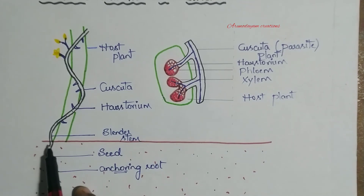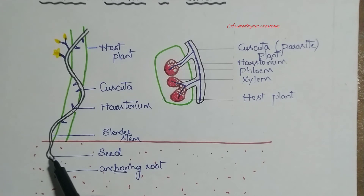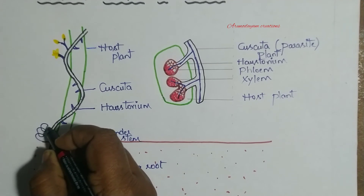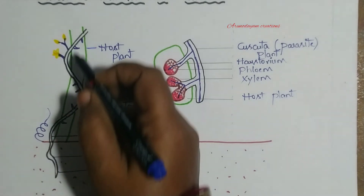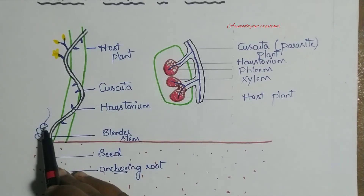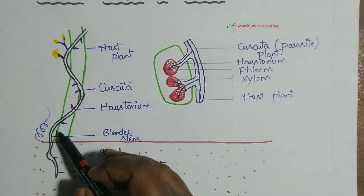This seed also produces a slender stem. It will grow in a spiral fashion. Whenever it touches any host plant, this stem will twine around the host plant.